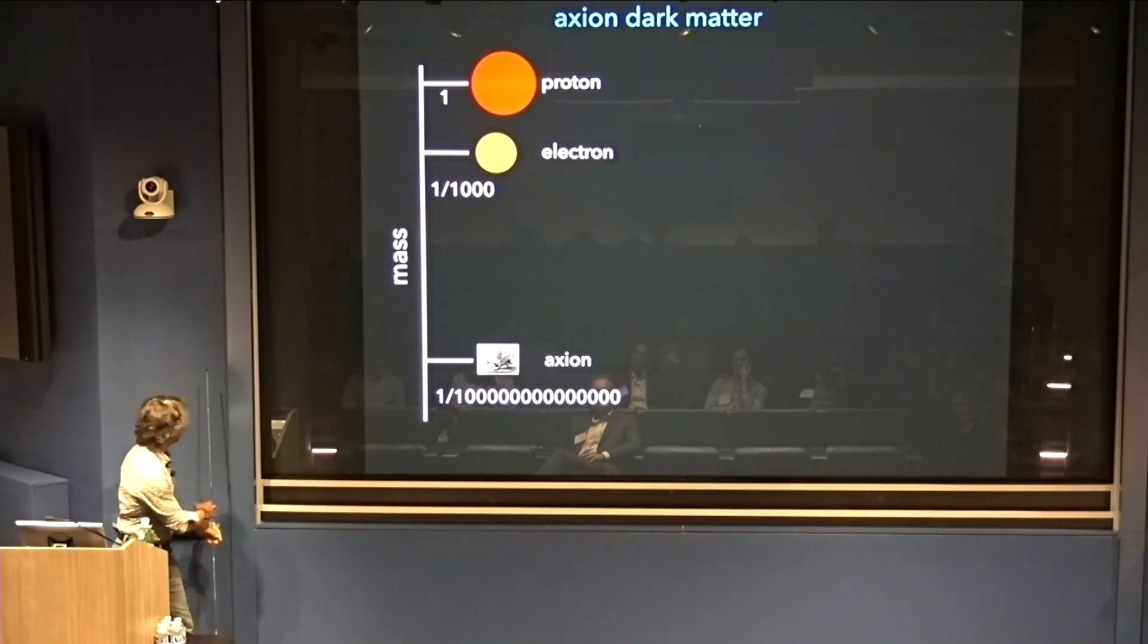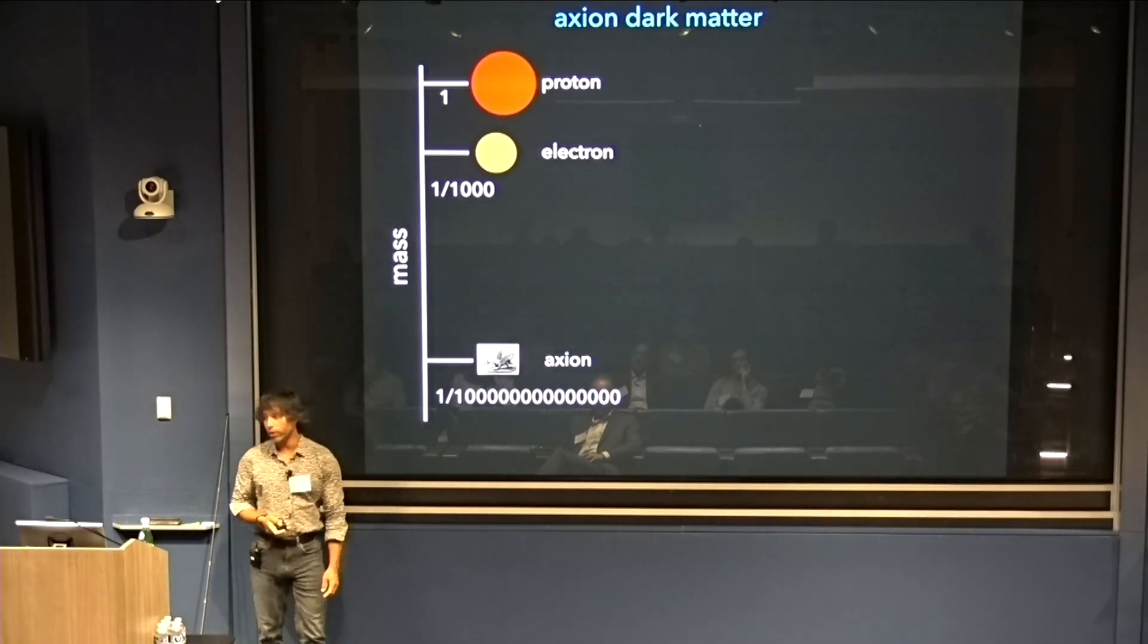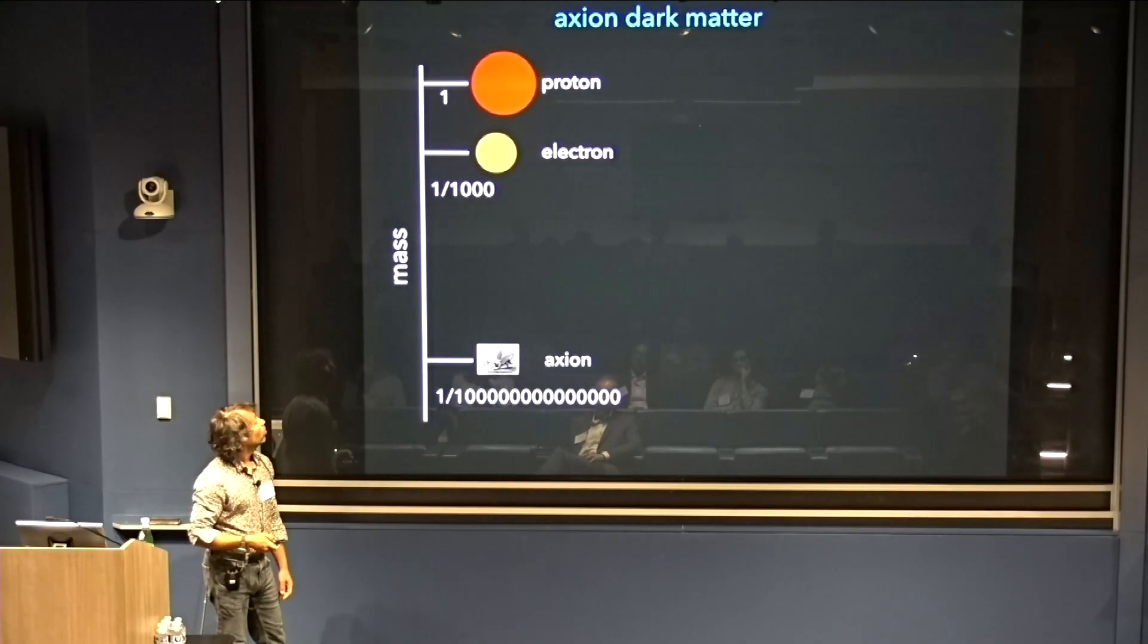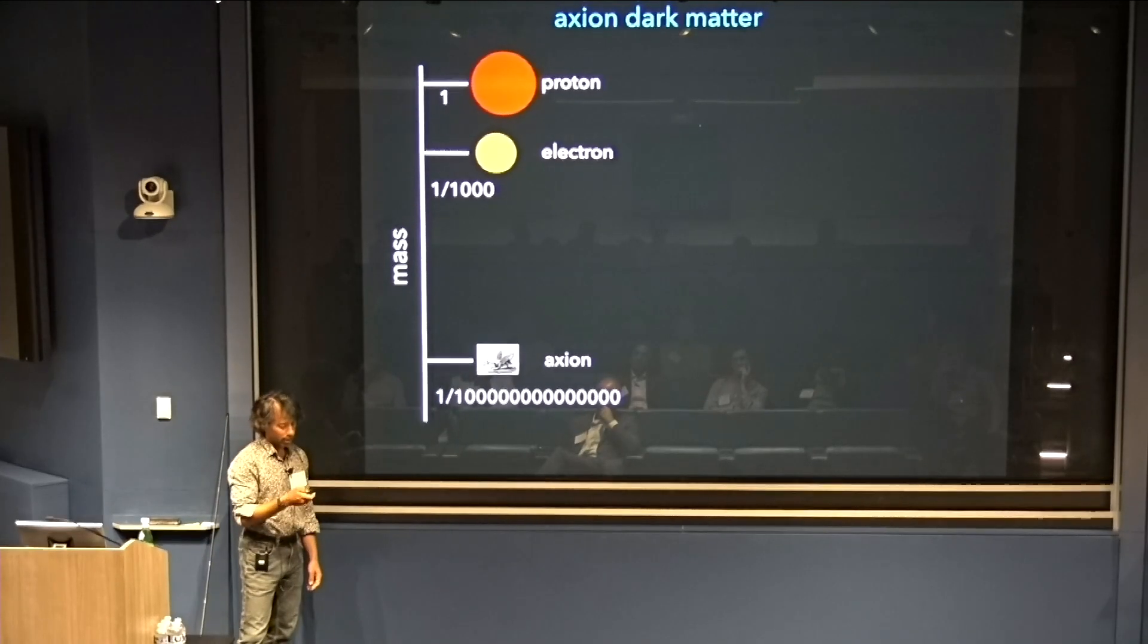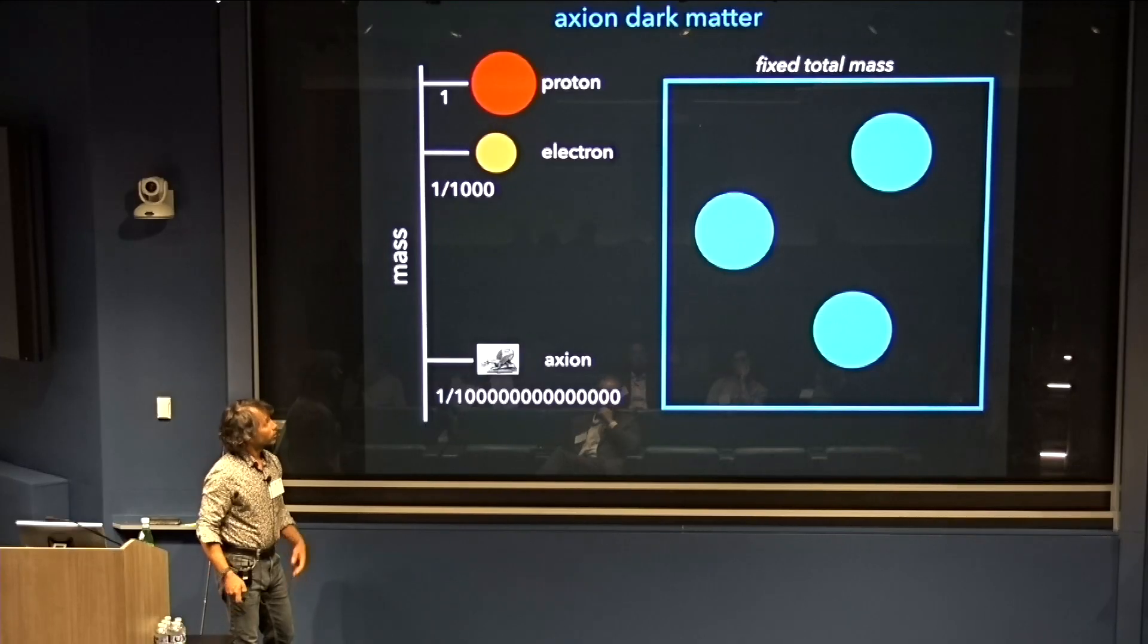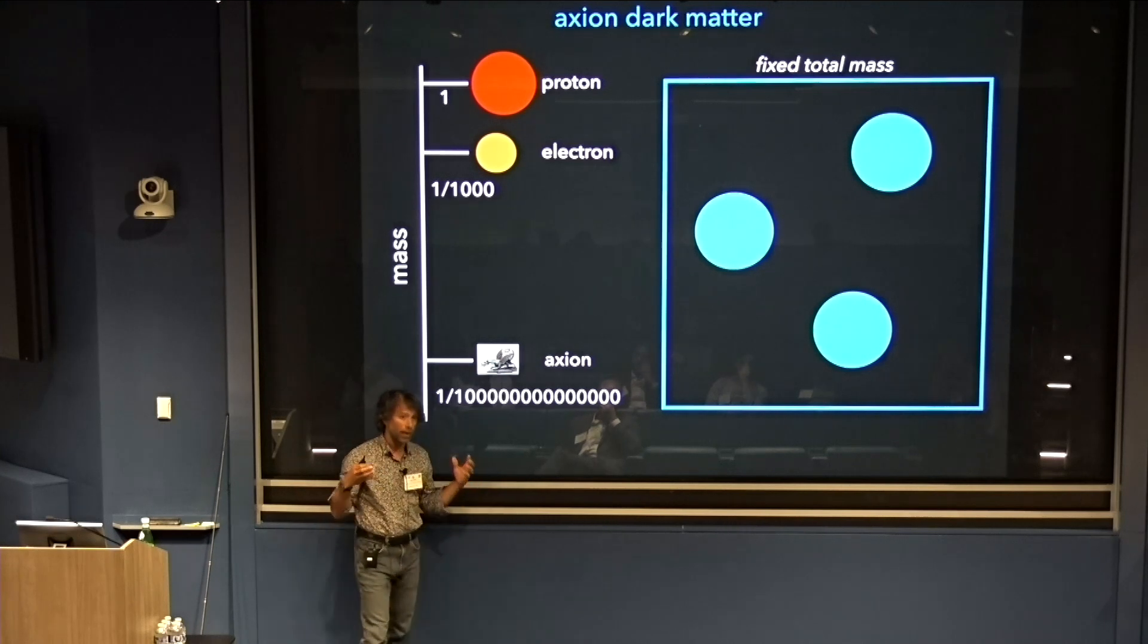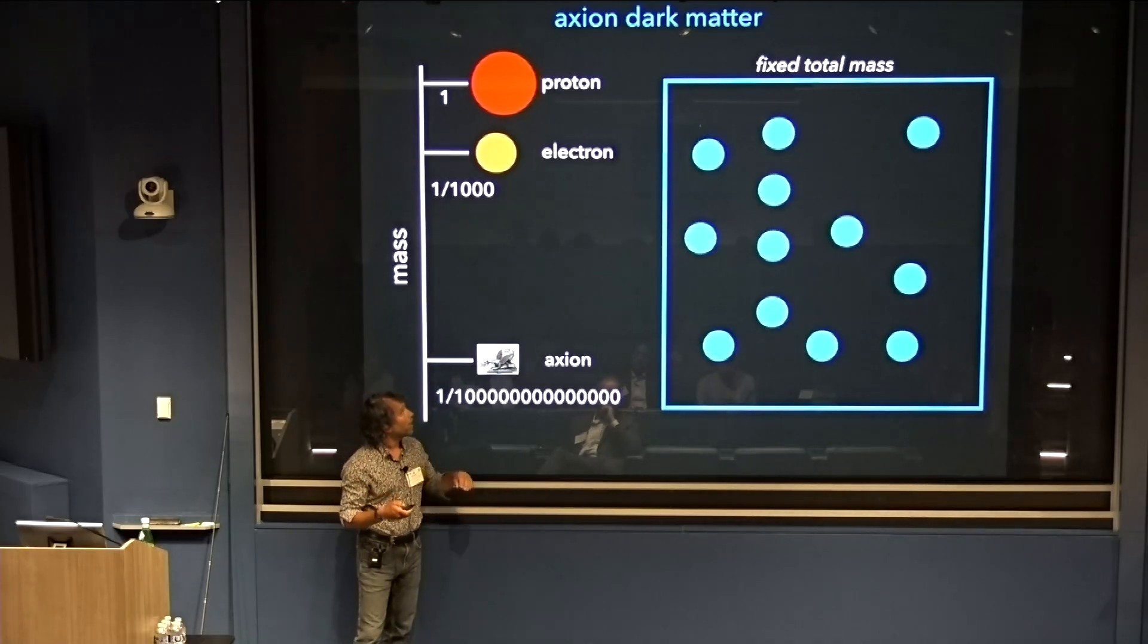Now we've talked about two motivations for the axions. They can solve the strong CP problem. They emerge generically in the context of string theory. But it turns out they can also explain the dark matter in our universe. How does that come about? Well, when we think about axions as dark matter, first, we use very different language than we, for example, talk about WIMPs as dark matter, simply because axions have a really small mass. When we talk about WIMPs as dark matter, we use the language of particles, because what we measure in astrophysics is the amount of mass within some volume. If we make the masses of these particles smaller and smaller, we need to pack more and more particles into that volume.